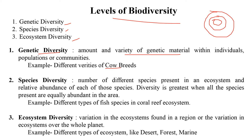Species diversity refers to the number of different species present in an ecosystem and the relative abundance of each species. Diversity is greatest when all species present are equally abundant in an area. When the number of species is high and the abundance of individuals is also high, that area has high species diversity. For example, in a coral ecosystem you can find different types of fish species, and in a forest you can find different types of bird species — that is species diversity.